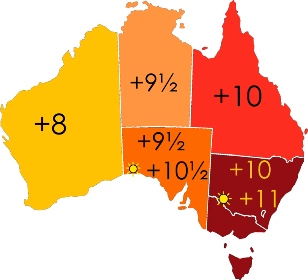When the Northern Territory was separated from South Australia and placed under federal jurisdiction, it kept Central Standard Time. Likewise, when the ACT was broken off from New South Wales, it retained Eastern Standard Time. Since 1899, the only major changes have been the setting of clocks to one half-hour earlier than Eastern Time on the Territory of Lord Howe Island, and Norfolk Island changing from UTC+11:30 to UTC+11 on 4 October 2015.